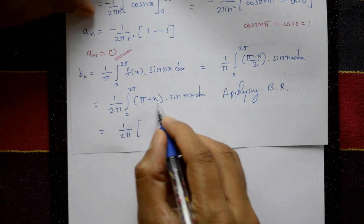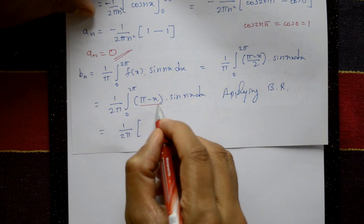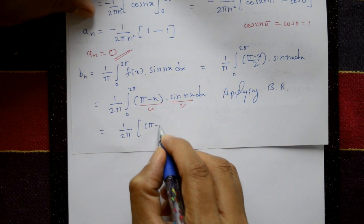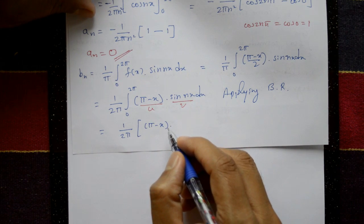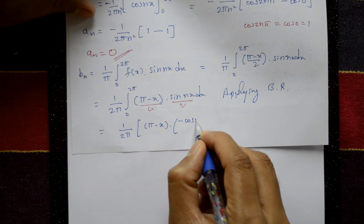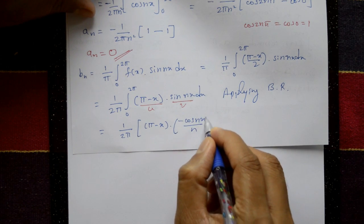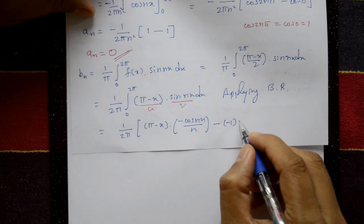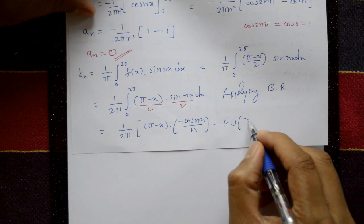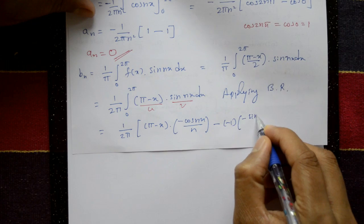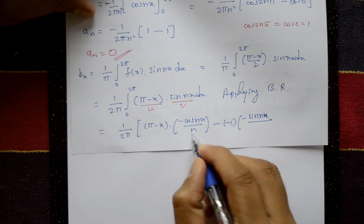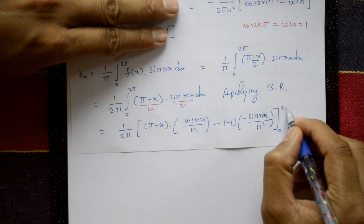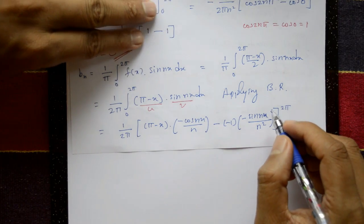With u = (π - x) and v = sin(nx): integrate sin(nx) to get -cos(nx)/n. The derivative of (π - x) is -1. The second integration of -cos(nx)/n gives -sin(nx)/n², with limits 0 to 2π.